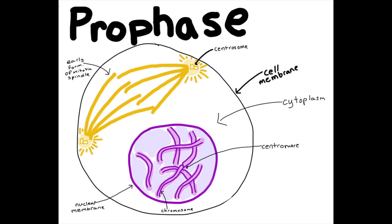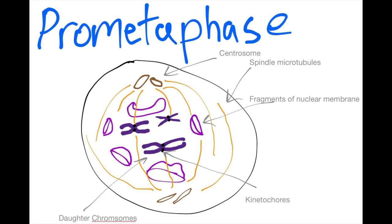Following that, it goes into prometaphase. The nuclear envelope breaks into fragments and microtubules emerging from the centrosomes reach the chromosomes, which are highly condensed. The spindle microtubules attach to the kinetochores and move to the center.